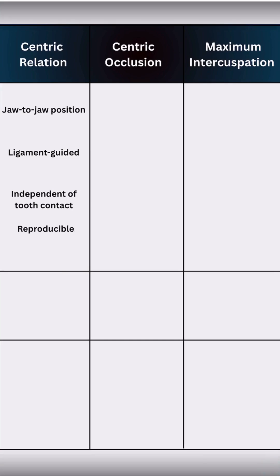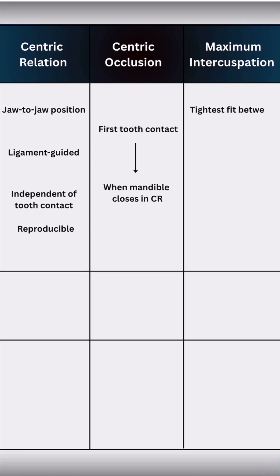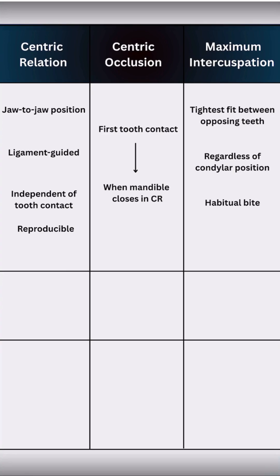Centric occlusion is the first tooth contact when the mandible closes in CR. Maximum intercuspation is the tightest fit between opposing teeth regardless of condylar position — think of it as your patient's habitual bite.